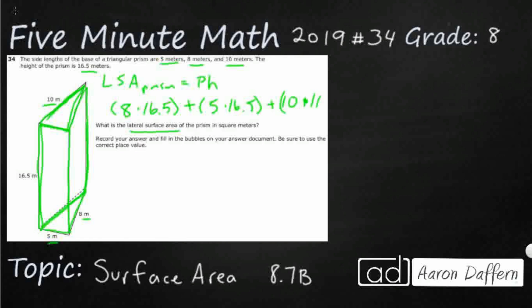10 times 16.5. Now what do you see as common? Well, look at that—16.5, 16.5, 16.5. So what you could do is actually factor that out. I'm gonna bring out the 16.5 and multiply it by everything that's left. What's left: I've got an 8 plus a 5.